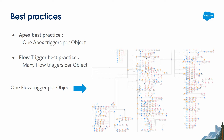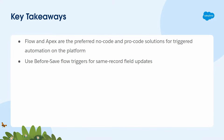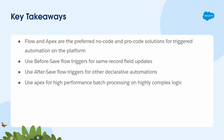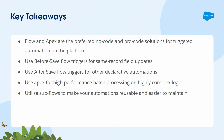As a developer, as an administrator, as an architect, it's very hard to maintain a monolithic flow. Our key takeaways: Flow and Apex are the preferred no-code and pro-code solutions for trigger automation. Use before-save flow triggers for same record field updates. Use after-save flow triggers for other declarative automation. Use Apex for high performance batch processing and highly complex logic. And please use sub-flows when working with flows.